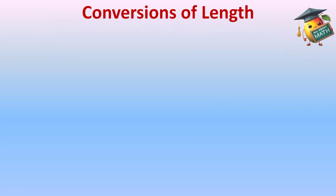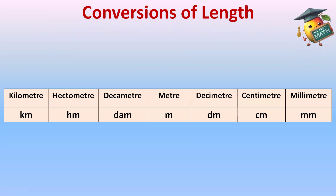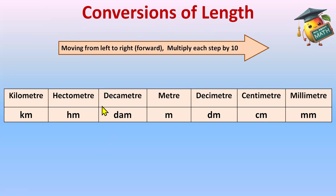Conversions of length — for that, first we'll make a table using King Henry died, mother didn't cry much. I have made a table. Now, moving from left to right, that is moving forward, multiply each step by 10.